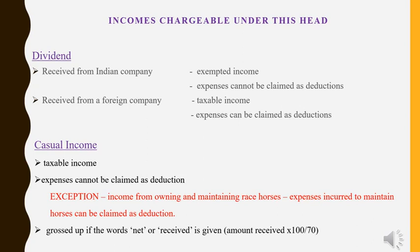The formula for grossing up is: amount received × 100 ÷ 70. For example, if the statement says 'lottery winnings 50,000' — the amount exceeds 10,000 but the words 'net' or 'received' are not given, so you do not gross it up; bring 50,000 directly to the outer column. On the other hand, if the statement says 'lottery winnings received 50,000 rupees,' the word 'received' is given, so you gross it up: 50,000 × 100 ÷ 70. Casual income is taxable, expenses cannot be claimed, and you gross up only when 'net' or 'received' is given and the amount exceeds 10,000 rupees.